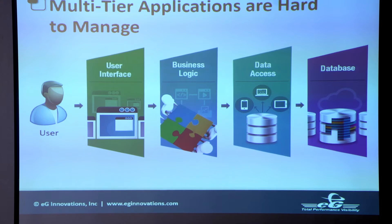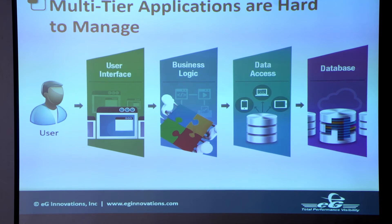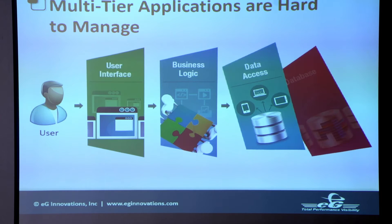On a typical scale, multi-tier applications are set up like this: at the user interface level you're looking at a web front-end or web server; at the business layer you have middleware; and at the data access layer you have your back-end database — whether that's Citrix, VMware, virtual cloud, or whatever you're using.